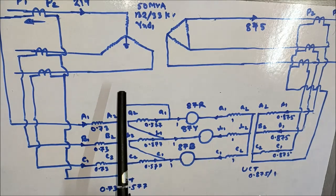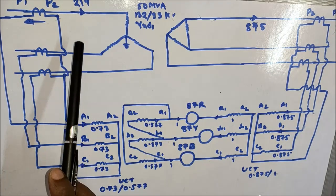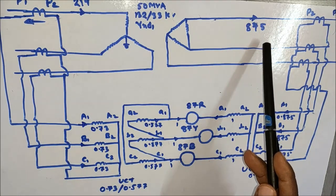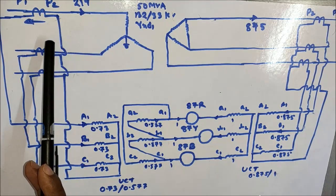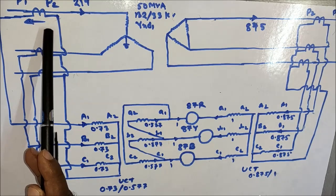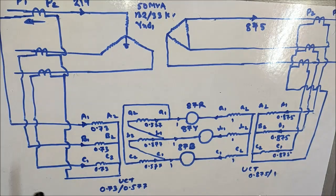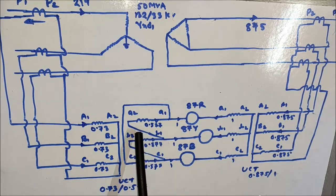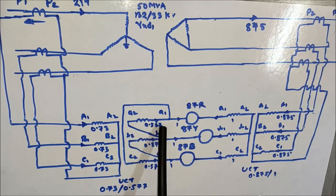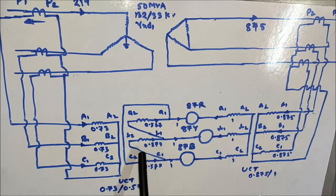Consider the transformer running at full load. The HV side current is 219 A and the LV side is 875 A. 219 A flows in the primary from P1 to P2, so with a CT ratio of 300/1, 0.73 A flows from H2 to H1 in the CT secondary. This 0.73 A flows in directions A1 to A2, B1 to B2, and C1 to C2 for all three phases. Therefore, in the delta secondary of the UCT, current flows from A2 to A1, B2 to B1, and C2 to C1 at 0.577 A for each phase.